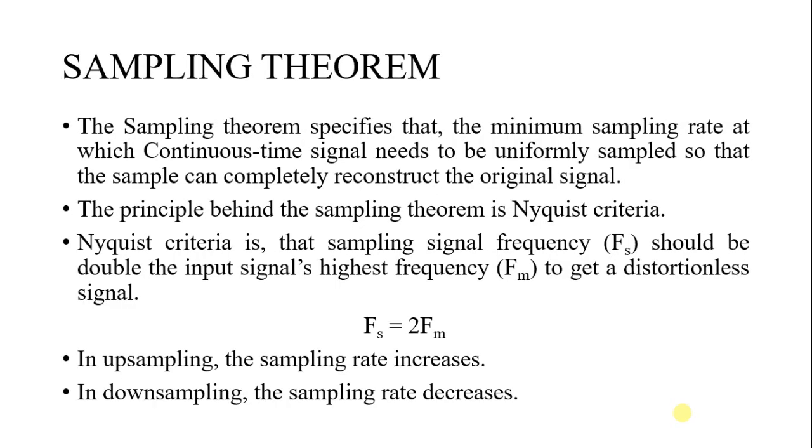Next is the sampling theorem. The sampling theorem specifies the minimum sampling rate at which a continuous time signal needs to be uniformly sampled so that the samples can completely reconstruct the original signal. The principle behind the sampling theorem is the Nyquist criterion. The Nyquist criterion states that the sampling signal frequency fs should be double the input signal's highest frequency f to get a distortionless signal: fs = 2f. In upsampling, the sample rate increases. In downsampling, the sample rate decreases.